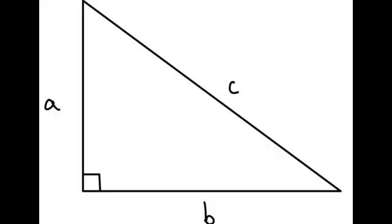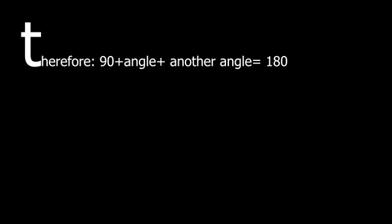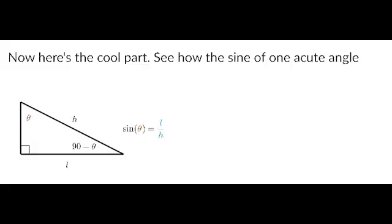Sine and cosine of complementary angles. In a right angle triangle, what do you see? You see a right angle. Sorry, anyways. Therefore, you can derive that 90 plus angle plus another angle equals 180. Right? Thus, we have the following angles: 90, theta, and 90 minus theta.